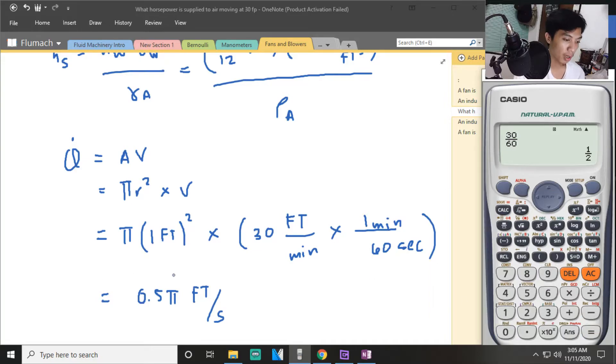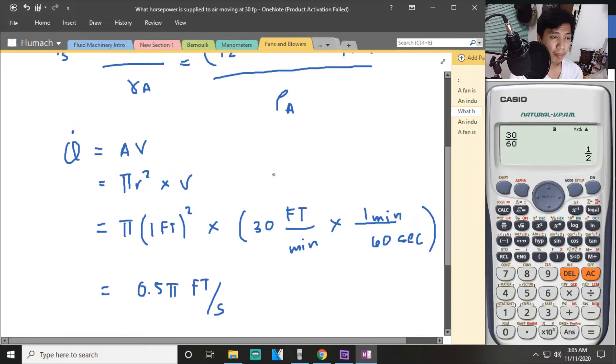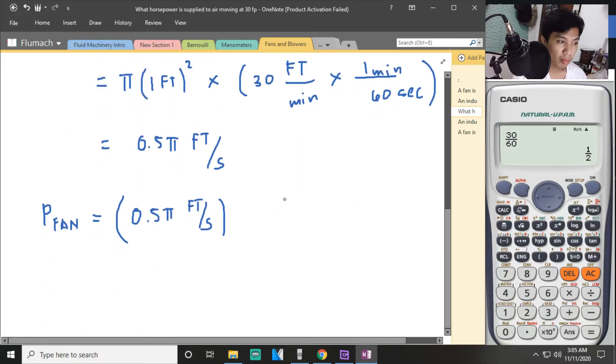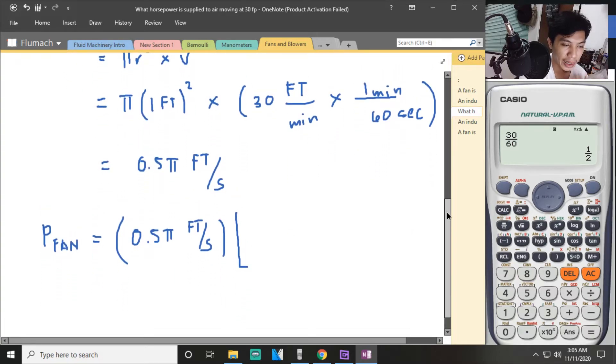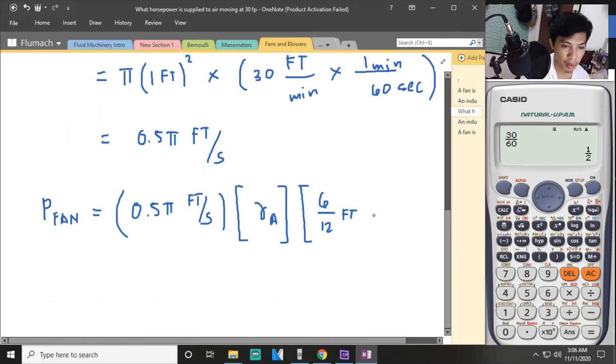Now you can solve for the power of the fan. So Q first, 0.5 pi feet per second. Sometimes I prefer minute because it's easier to remember the conversion. Then density of air. Then multiply by the static head. So that is 6 over 12 feet times 62.4 pounds per cubic feet.